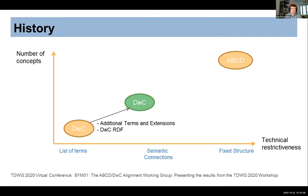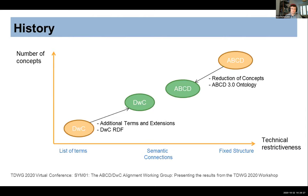Things change and standards evolve. More and more terms were added to Darwin Core, with many extensions now available, and there's an RDF guide on how to express Darwin Core as RDF, moving Darwin Core more toward the center. For ABCD, we had the ABCD3 project, where we took the XML schema, reduced its complexity and number of concepts, and made it into an ABCD ontology. We still have ABCD3 XML somewhat close to the original ABCD2 XML. Both standards now move closer together and occupy the same space within this graph. Since they've gotten closer, maybe there's an opportunity to align them better.